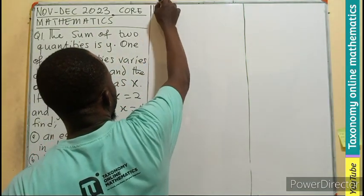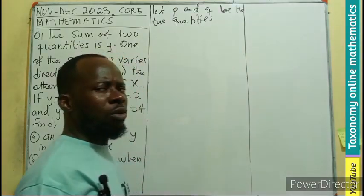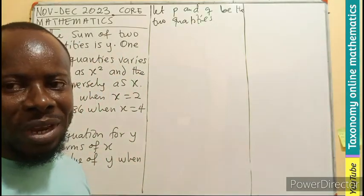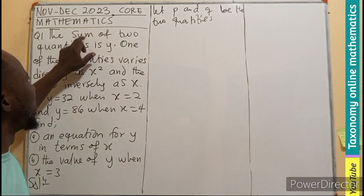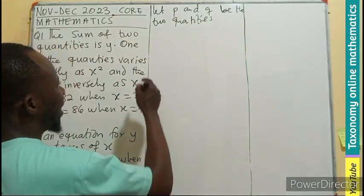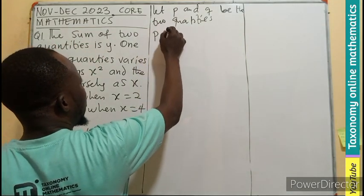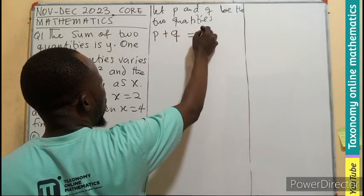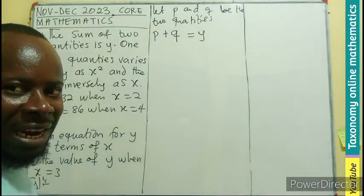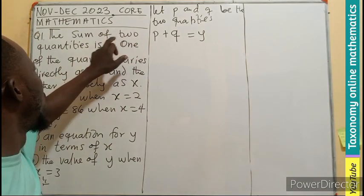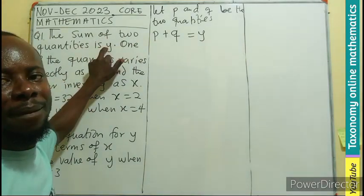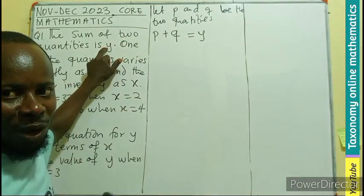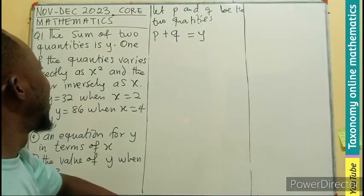So we are going to pick P and Q to be the two quantities. Let's say the sum. You know, sum is addition. So we are going to say that P plus Q equals to Y. Do you get that? The sum of two quantities is P plus Q equals to Y. So the sum is Y.